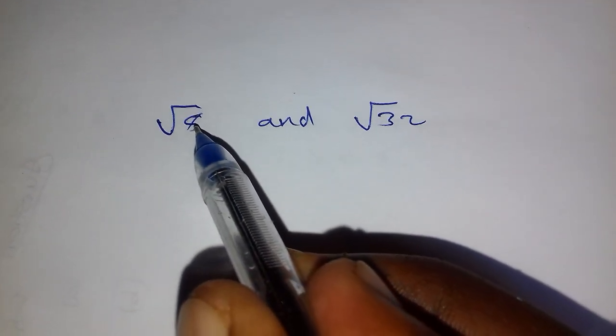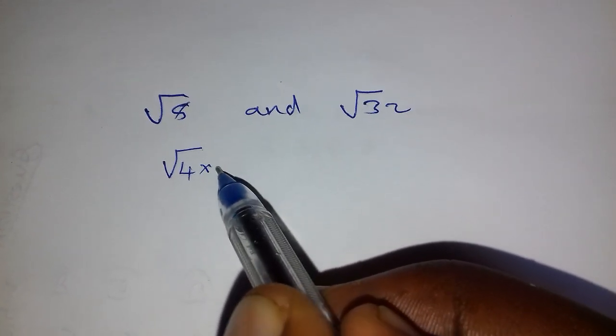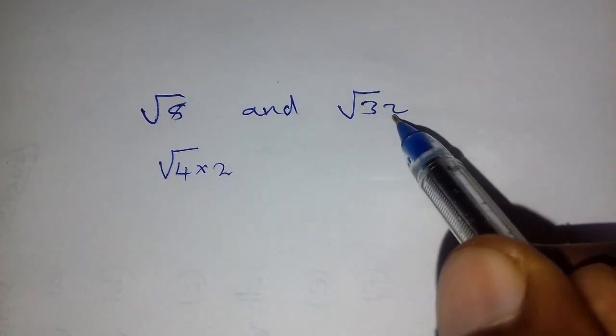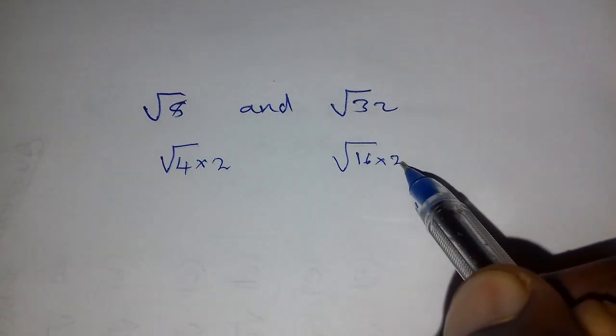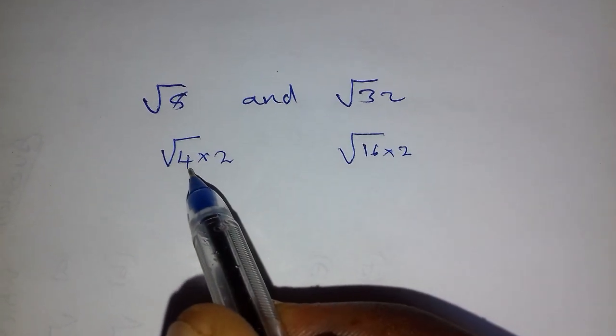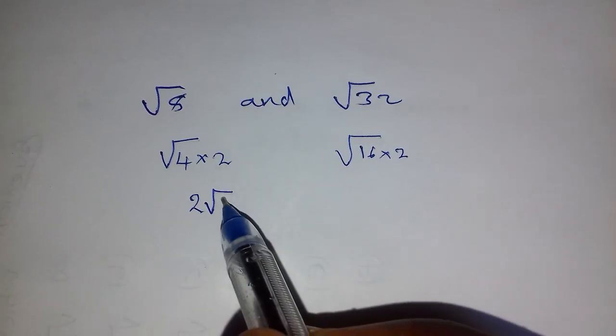Now any perfect square that can go into 8, it is 4. How many times? 2. Any perfect square that can go into 32, 16. How many times? 2. Now what is the square root of 4? The square root of 4 is 2, so it goes outside the square root. What remains? 2.